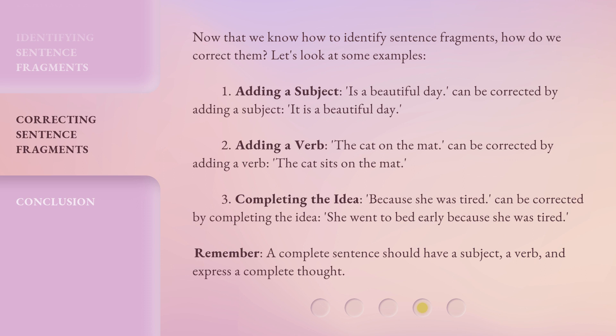"The cat sits on the mat." Third, completing the idea: "because she was tired" can be corrected by completing the idea — "she went to bed early because she was tired." Remember, a complete sentence should have a subject, a verb, and express a complete thought.